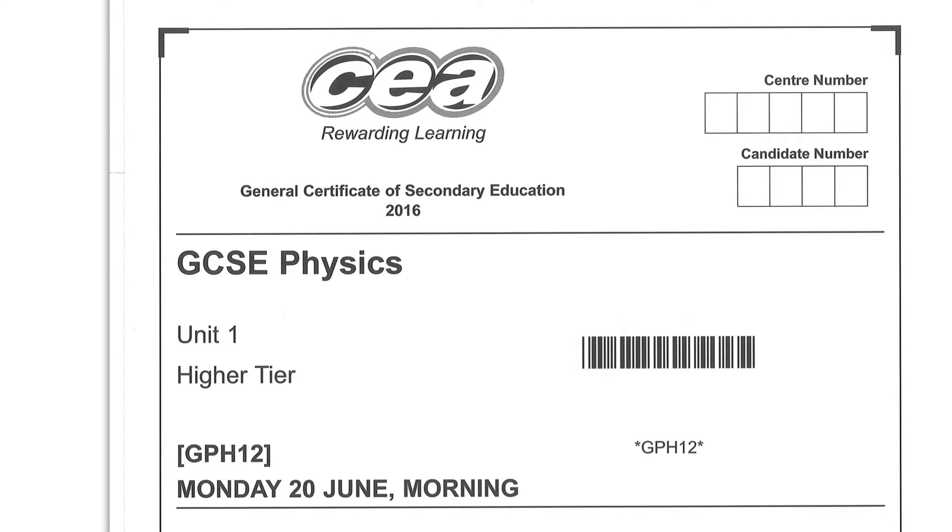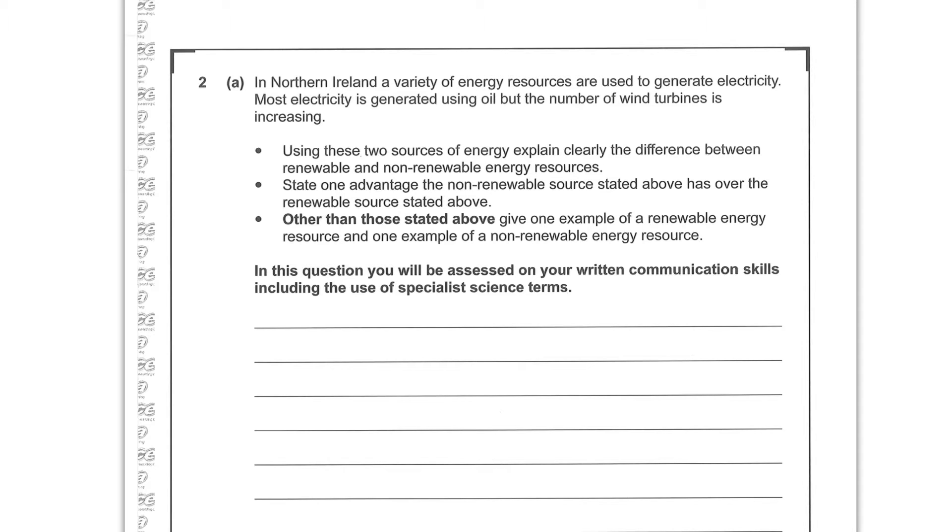We are looking at GCSE Physics Unit 1 Higher Tier from CCEA for 2016, Question 2a. In Northern Ireland, a variety of energy resources are used to generate electricity. Most electricity is generated using oil, but the number of wind turbines is increasing. Using these two sources of energy, explain clearly the difference between renewable and non-renewable energy resources.